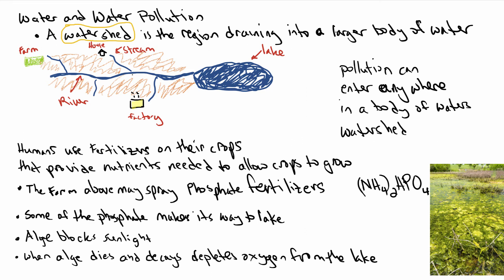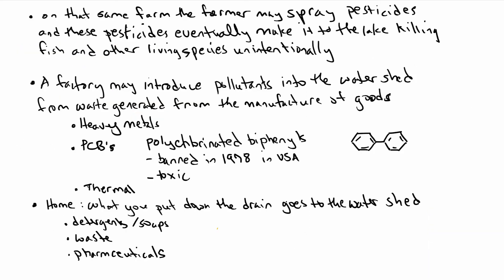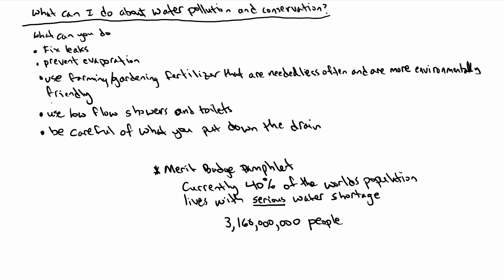Lastly, there's a house near a stream that flows down to the river and the lake. What you put down the drain goes into the watershed — detergents, soaps, any waste from the garbage disposal. Pharmaceuticals are now also a problem; they've been detected in the watershed because people take medicinal drugs and those enter the water when they go to the bathroom.